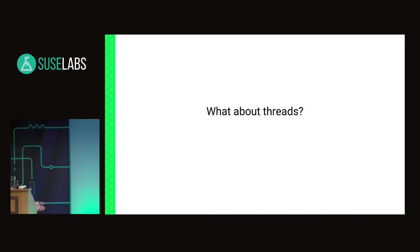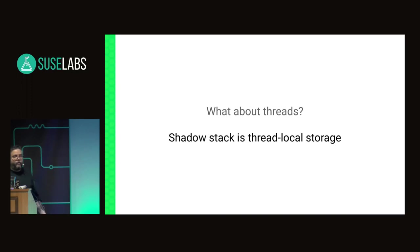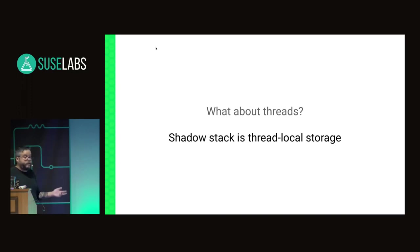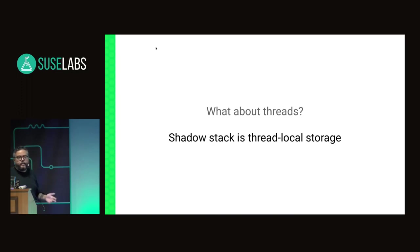What about threads? The shadow stack variable is thread-local storage, so one thread is not interfering with another. We can track this at thread granularity — it's not a problem.